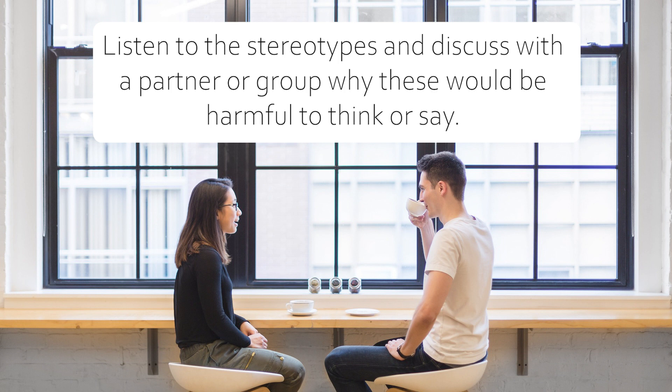With a partner or in a small group, listen to the following stereotypes. Then discuss with your partner or group why the statement would be considered a stereotype. Discuss why it might be harmful to say something like that. Finally, and most importantly, discuss how you would go about patiently and kindly helping someone see that what they're saying is actually a harmful stereotype. Practice with your partner or group what you would say.